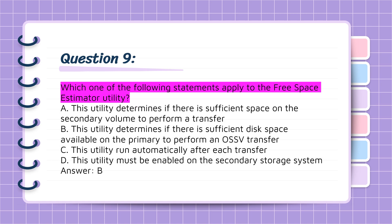Question 9: Which one of the following statements applies to the Free Space Estimator utility? A. This utility determines if there is sufficient space on the secondary volume to perform a transfer. B. This utility determines if there is sufficient disk space available on the primary to perform an OSSV transfer. C. This utility runs automatically after each transfer. D. This utility must be enabled on the secondary storage system. Answer: B.